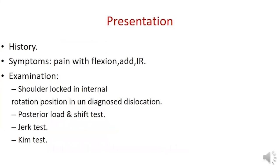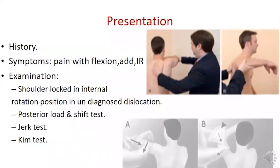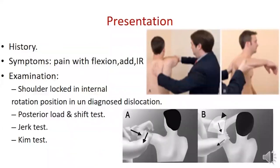The patient may present with history of trauma and complain of pain with flexion, adduction, and internal rotation. The jerk test is performed with the arm at 90 degrees of abduction and internal rotation, elbow bent, applying an axial force along the humerus and adducting into forward flexion — a clunk is positive for posterior subluxation. The Kim test is performed seated with the arm at 90 degrees abduction, flexing to 45 degrees forward while applying axial load at the elbow and a posterior-inferior force to the upper humerus; positive when pain is present.